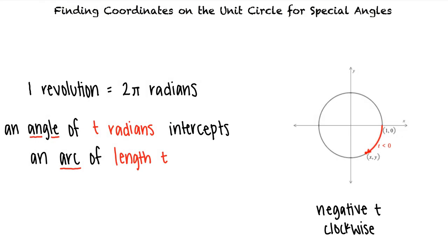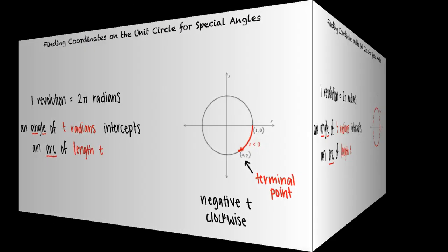The point where we end is known as the terminal point. Since one full revolution around the unit circle is two pi radians, the circumference is two pi. And thus, the terminal point determined by two pi is 1 comma 0.